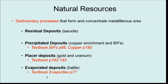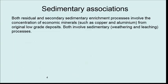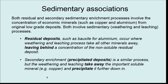Make sure you read through the textbook for more detail. Residual deposits are responsible for the formation of bauxite, which is the ore for aluminium. Precipitated deposits normally refer to questions on copper and banded iron formations. Placer deposits normally refer to gold, uranium, and sometimes cassiterite, which is tin. Evaporite deposits always refer to rock salts such as halite.